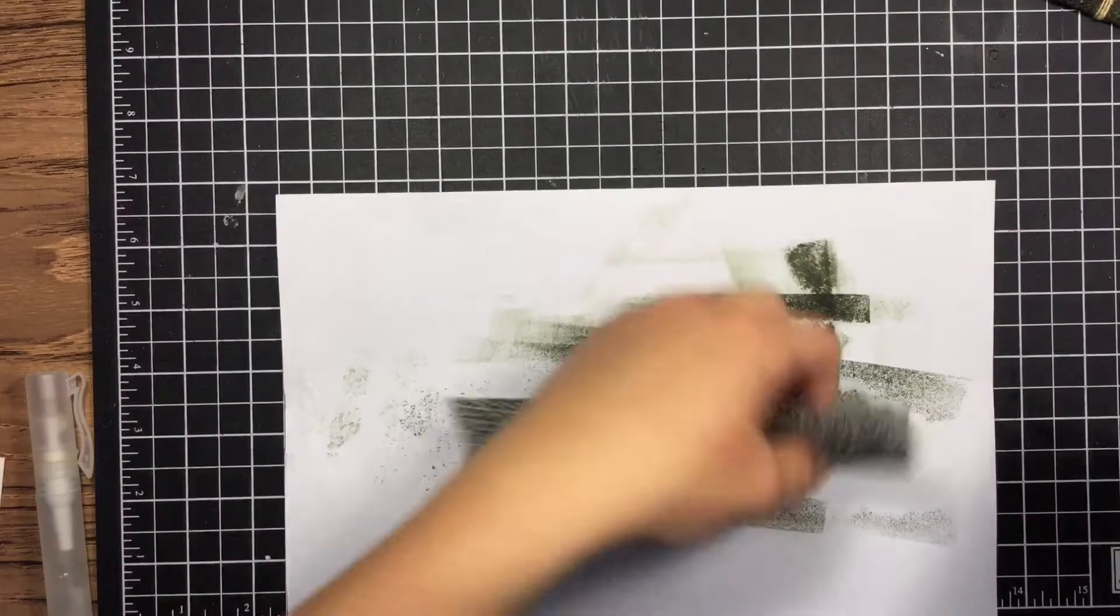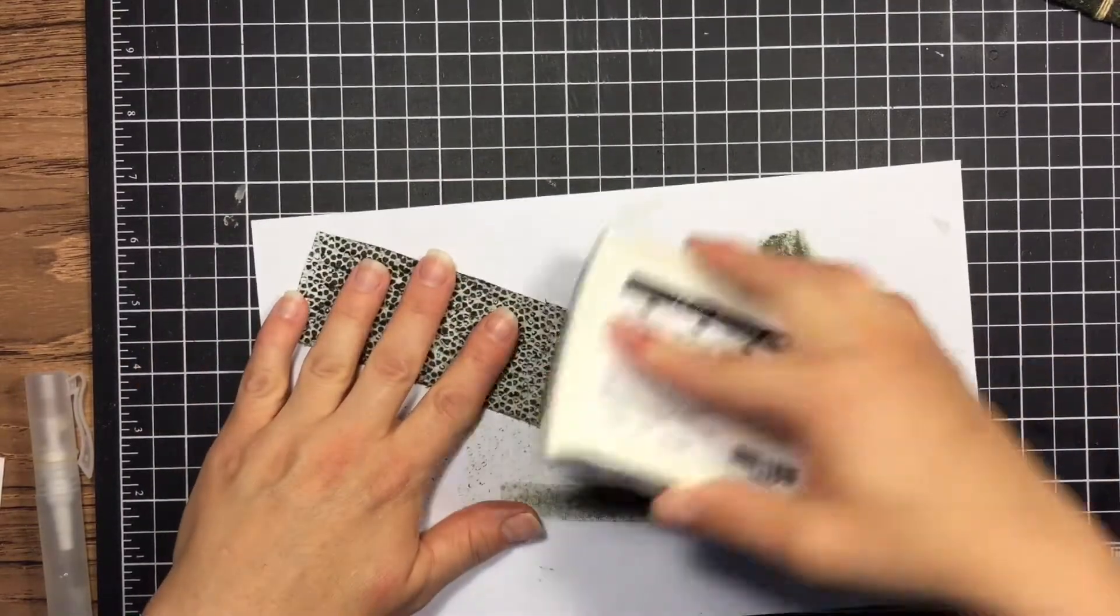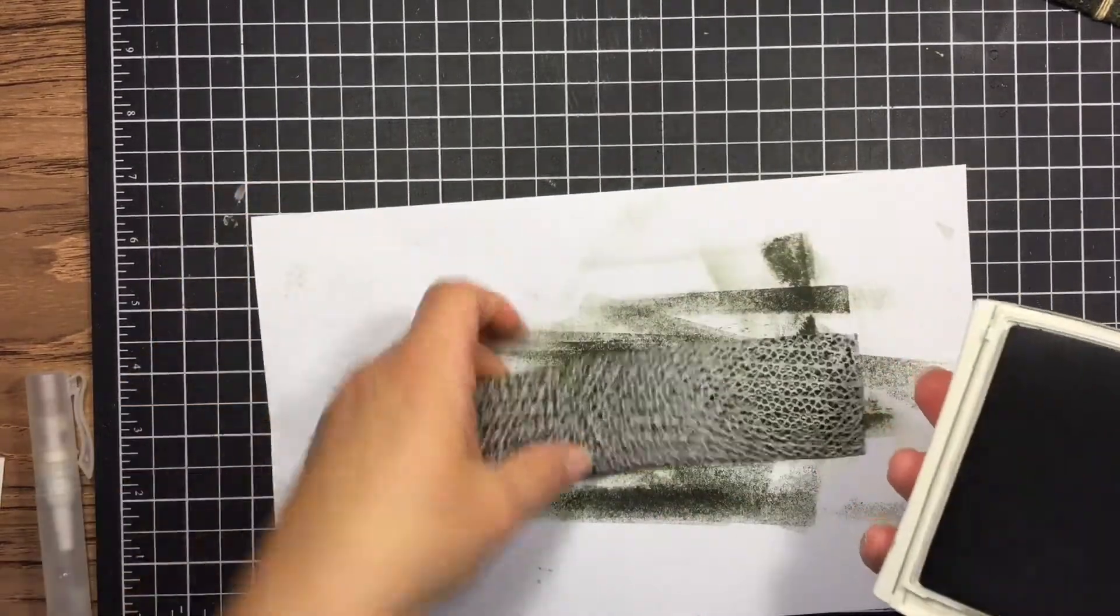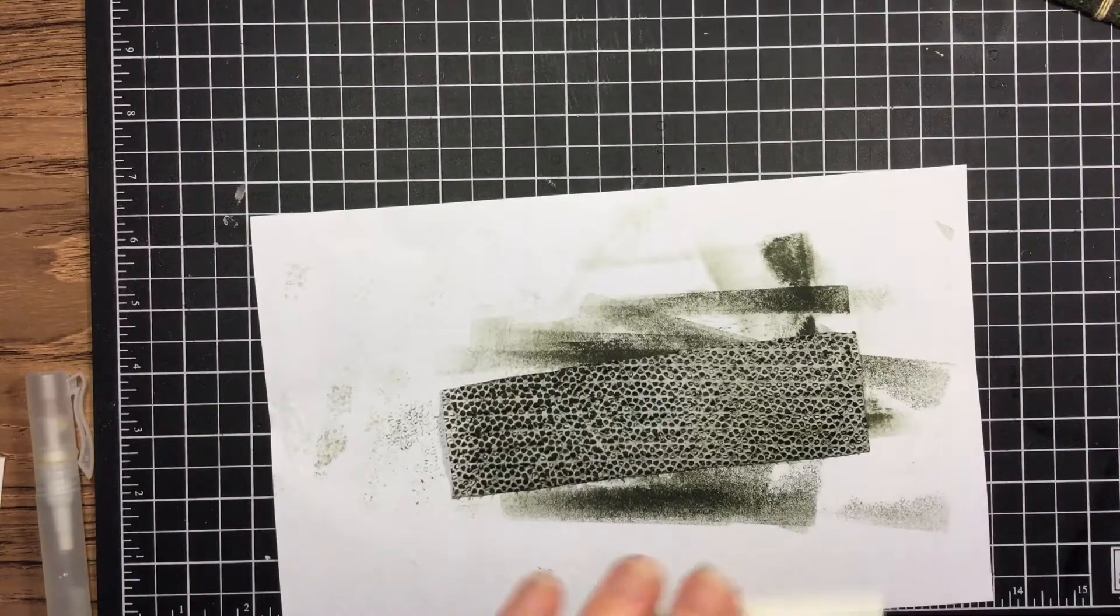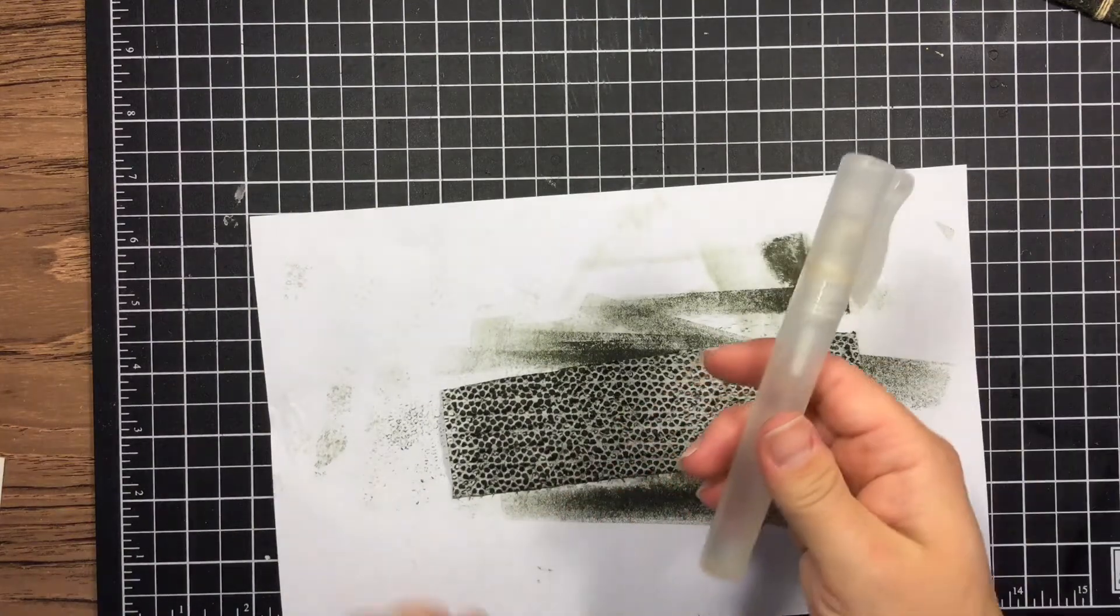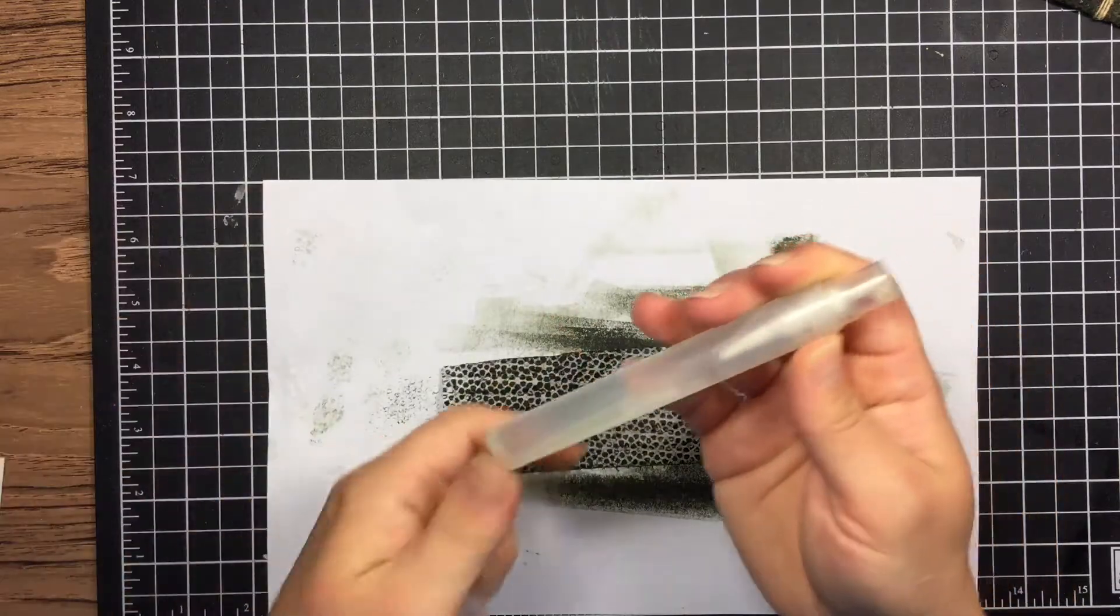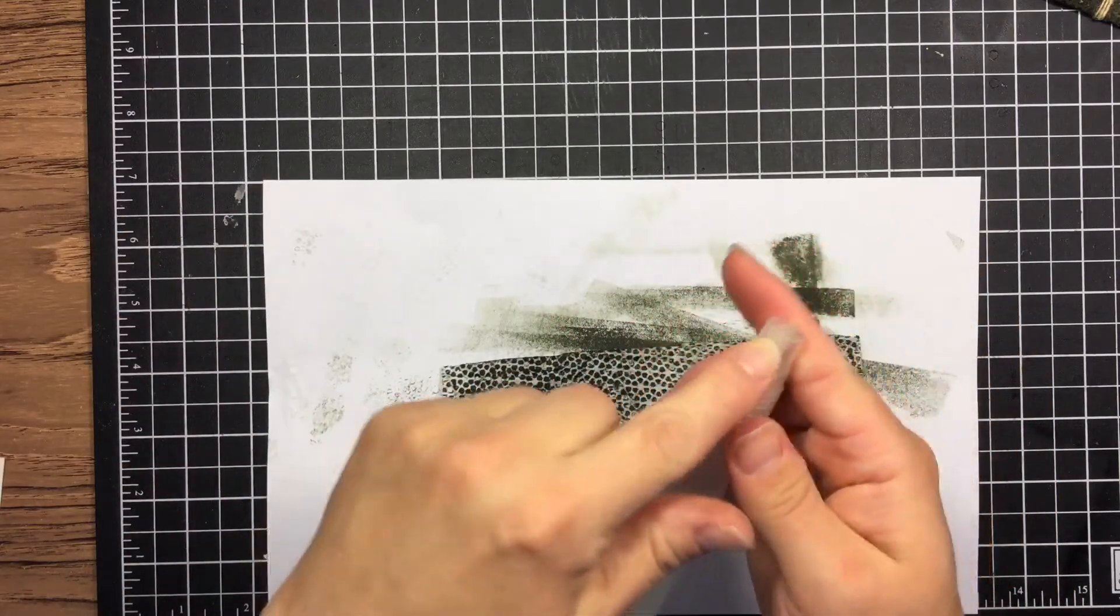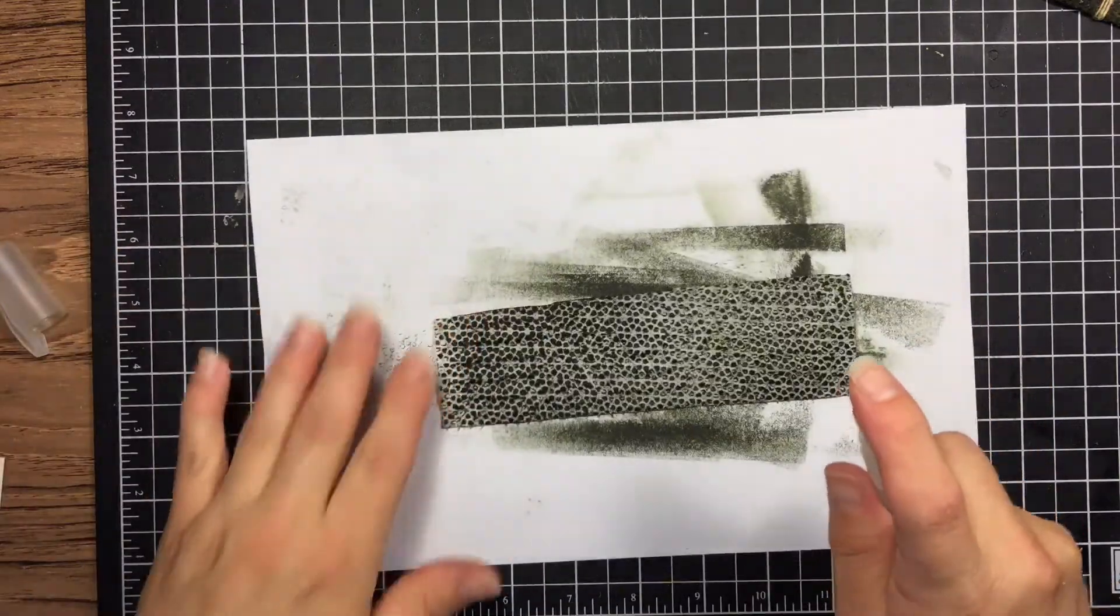You're not going for totally even coverage here. You're just trying to get that ink into the paper towel. Once you get that done, you're going to take a spritzer. I just have one here with plain water in it, and I'm going to spray that.